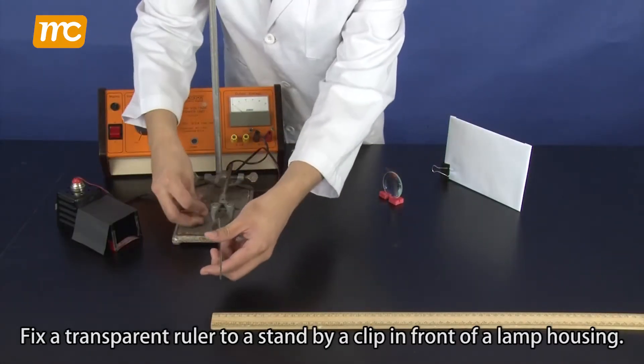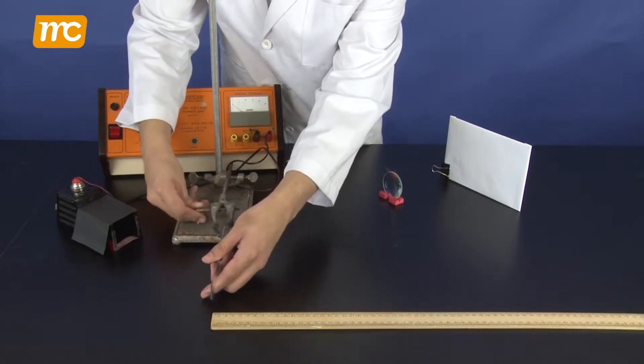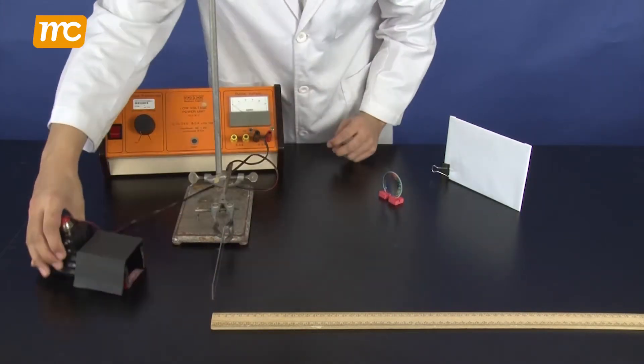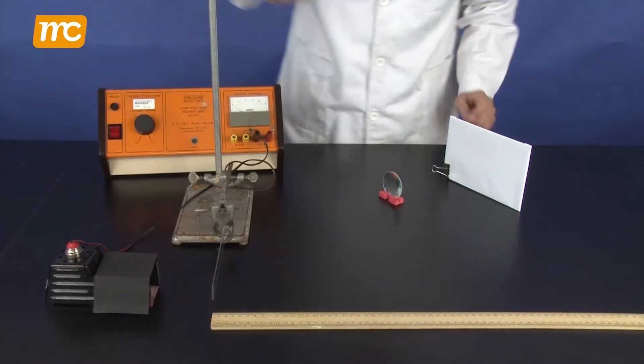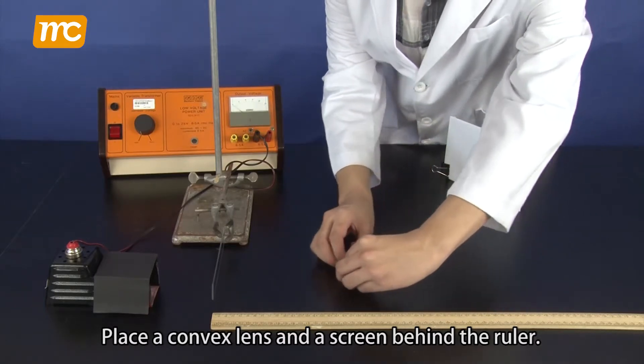Fix a transparent ruler to a stand by a clip in front of a lamp housing. Place a convex lens and a screen behind the ruler.